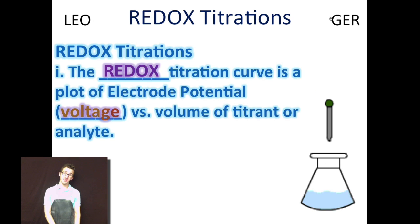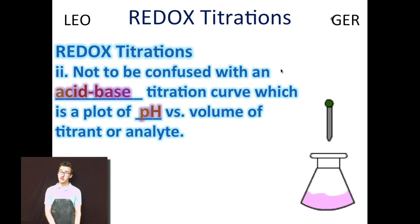With a redox titration curve, the plot is electrode potential (voltage) versus volume of your titrant, not to be confused with an acid-base titration, which is a plot of pH against volume of titrant.